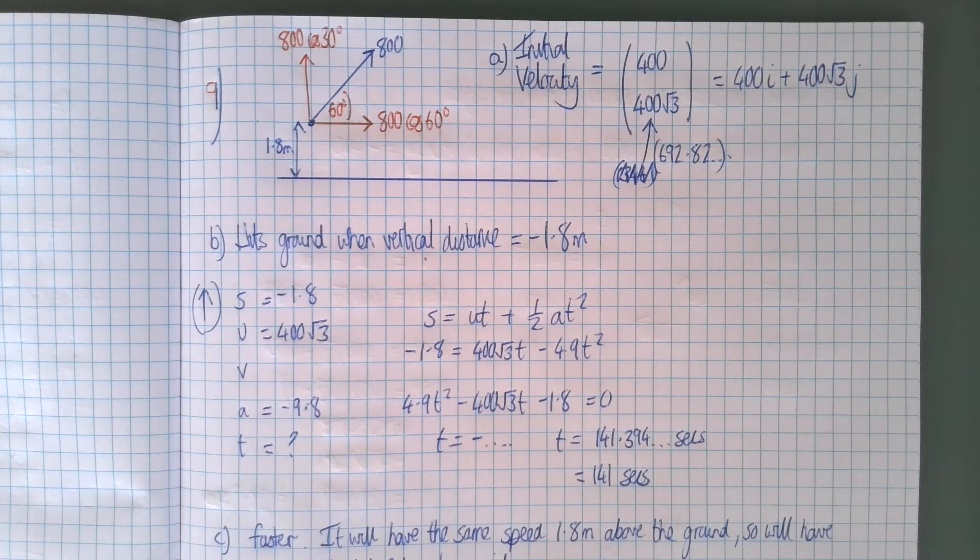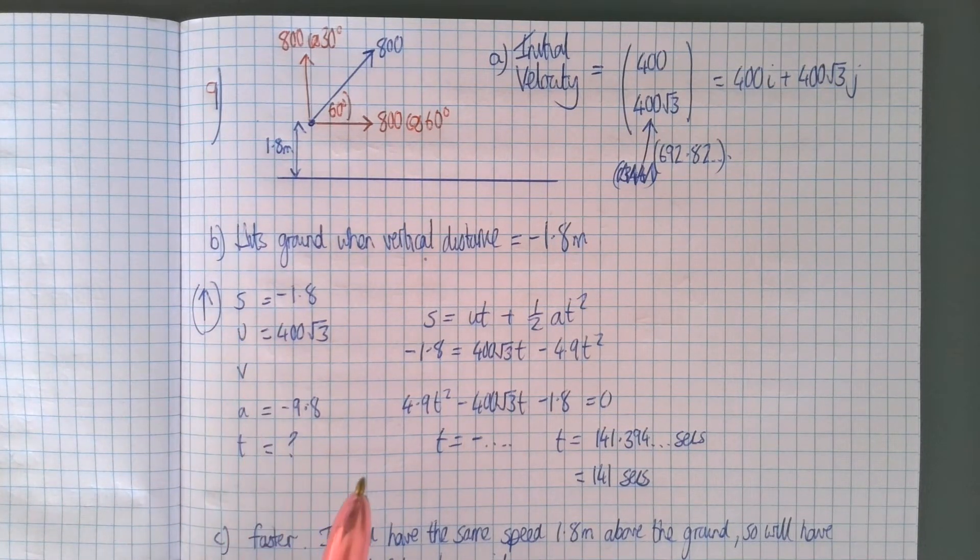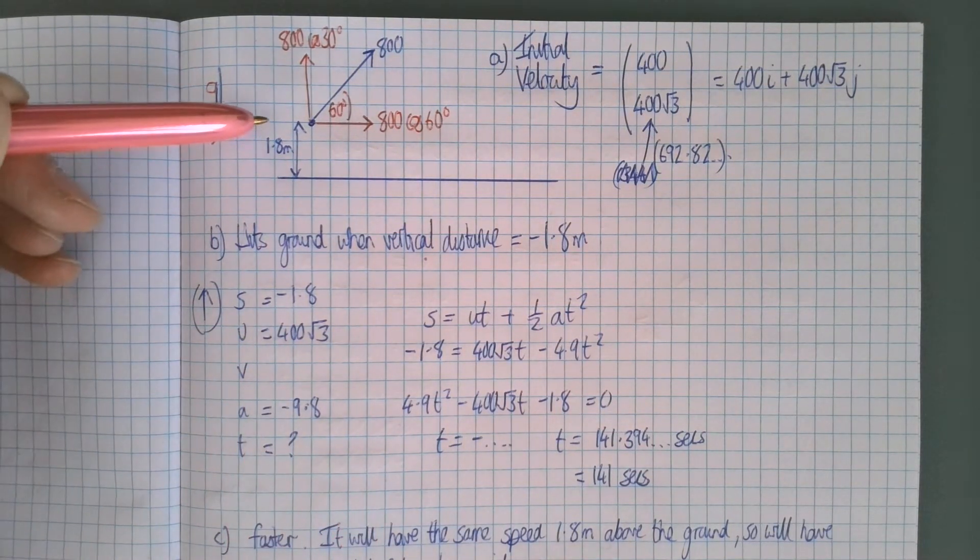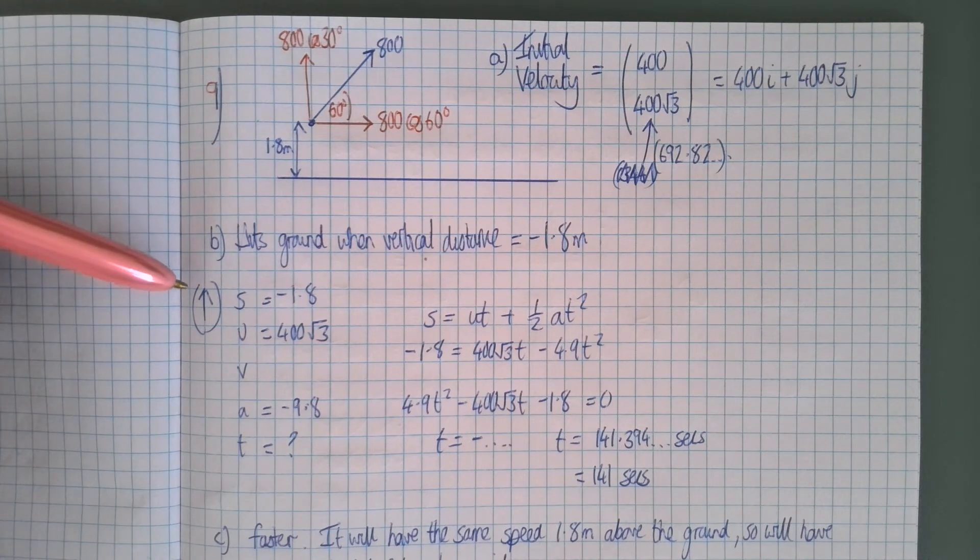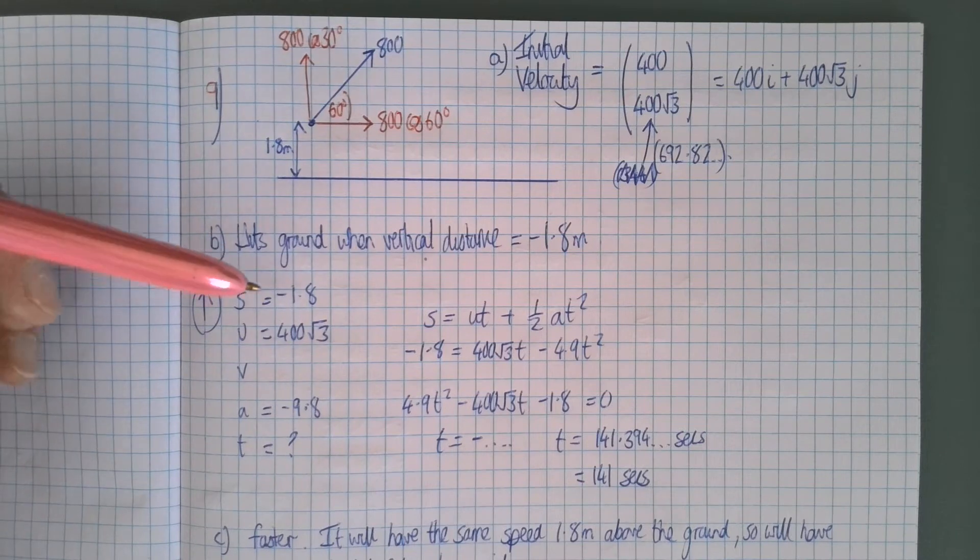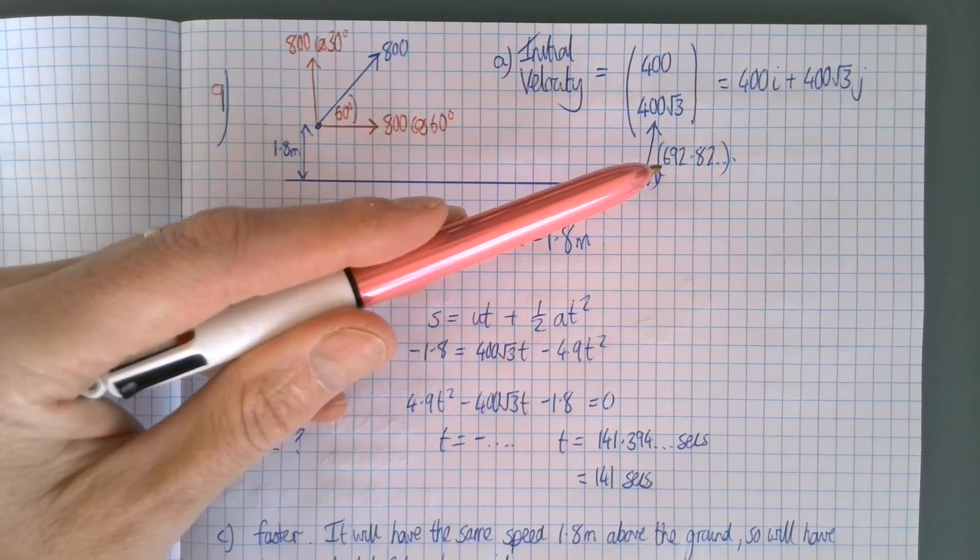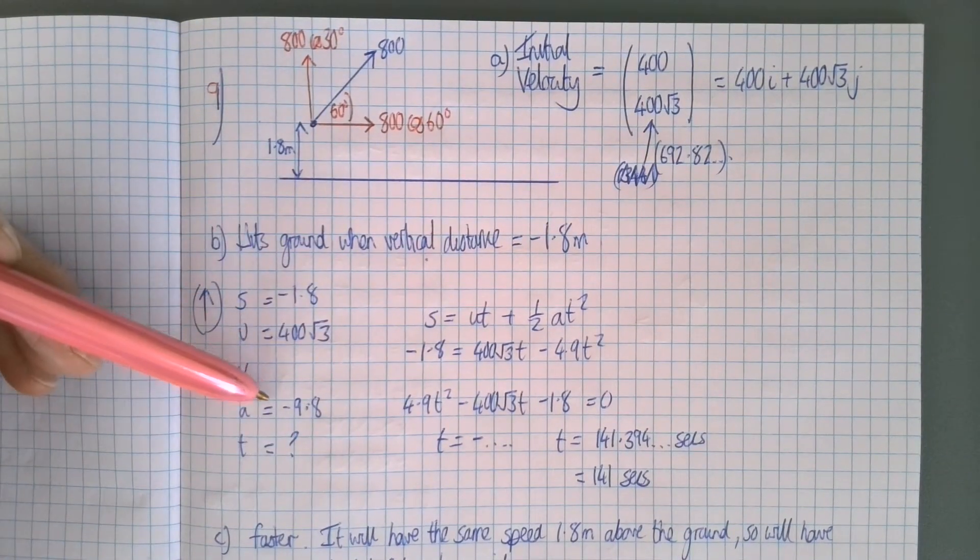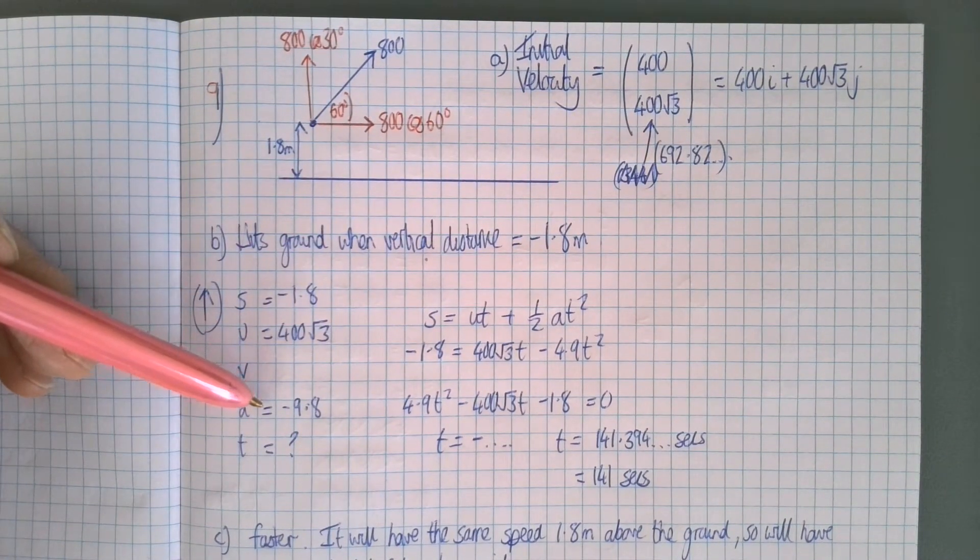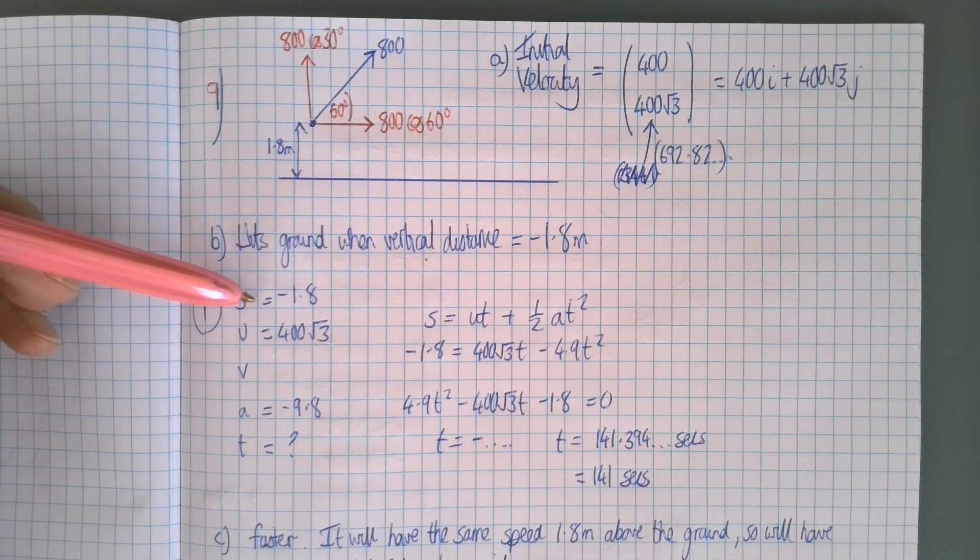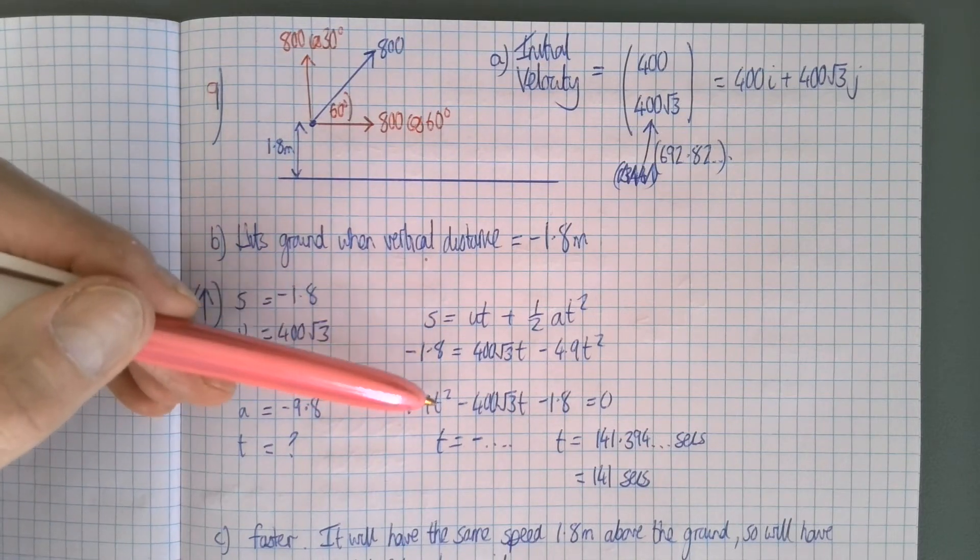So part b, when does it hit the ground? That's when its vertical distance is minus 1.8 because it starts 1.8 meters above the ground. So I just worked vertically, not in terms of vectors. Its initial vertical velocity is plus 400 root 3, which means the acceleration is minus 9.8 meters per second squared, and I'm just asking when does s equal minus 1.8.